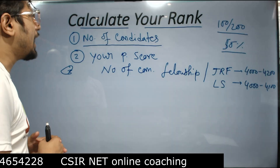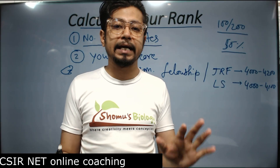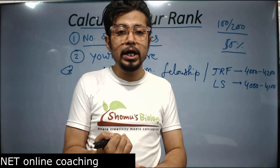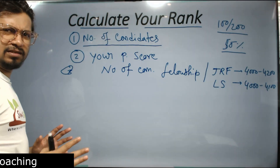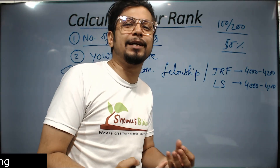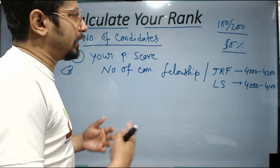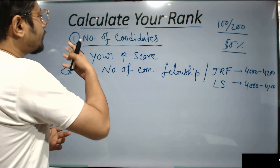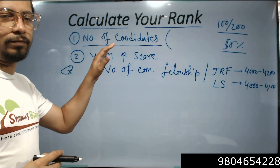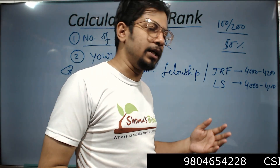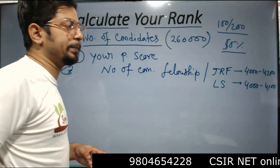On average, they give four thousand to four thousand five hundred JRF candidates. Remember, this is not for any particular session or only for life science — this includes all disciplines: UGC JRF, CSIR JRF, and LS combined. It's only one and a half to two percent of candidates who actually qualify — really sad but true. This data is disclosed by CSIR itself. For example, in June 2023, approximately 260,000 people applied.